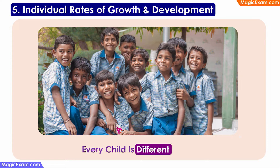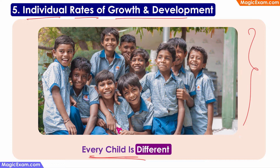The next principle of development is individual rates of growth and development. If you look at a typical classroom, every child is different — the physical growth of every child will be different. Some children may grow fast, some children will take more time. Similarly, in language development, some children may learn language much faster than others, and some children may develop cognitive ability much earlier than others. Therefore, the growth and development of every child will be different. Restated, this principle of individual rates of growth and development simply means every child is different.